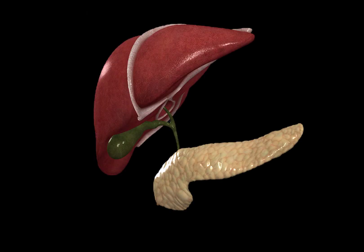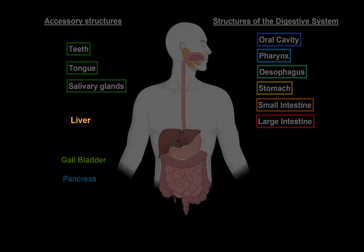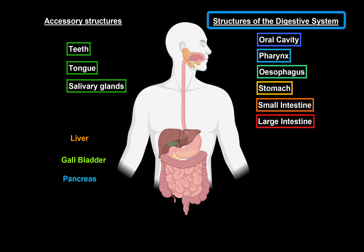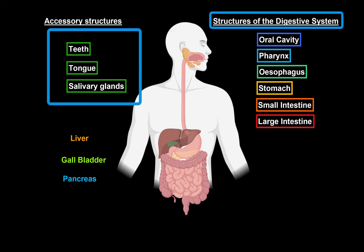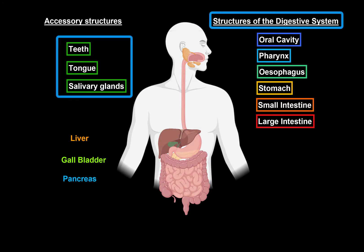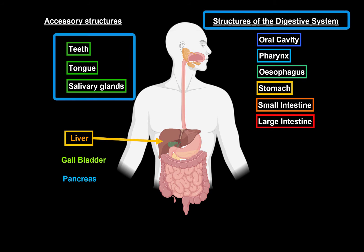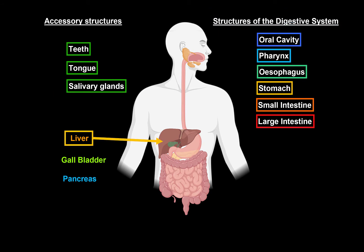What's up? Merde here. And in this video, we're going to go through the anatomy of the liver. Now that we've gone through all the digestive system structures, along with the three accessory organs up here in the mouth, we will do the next structure, which is the liver, since it has an essential role in digestion.